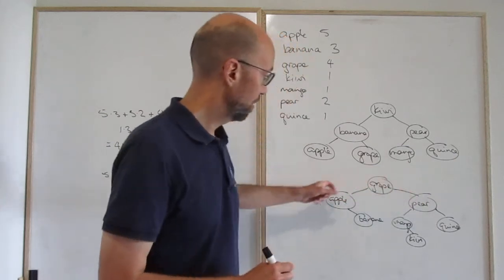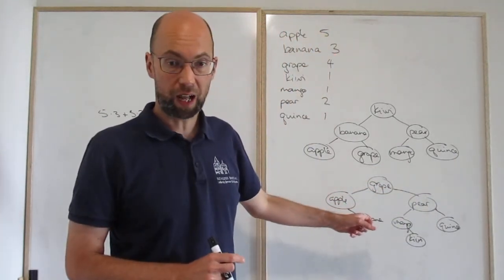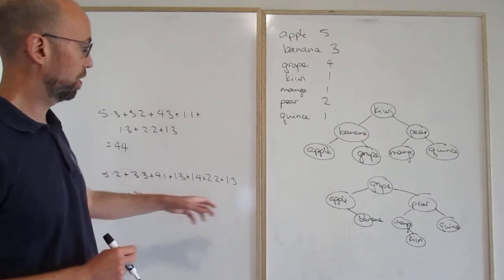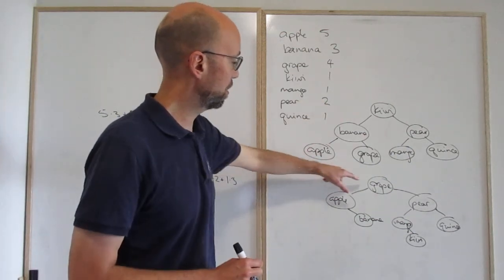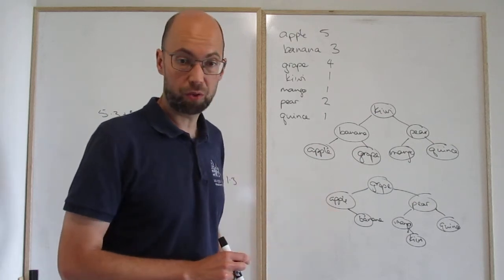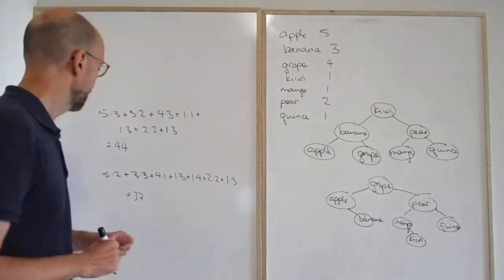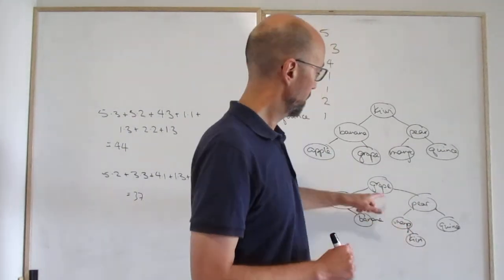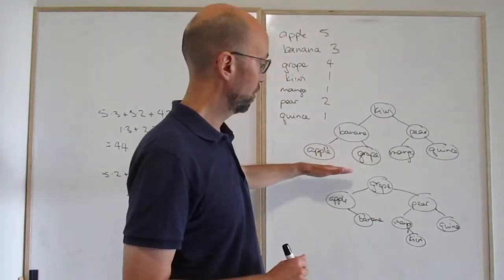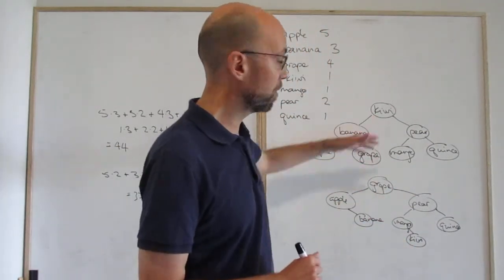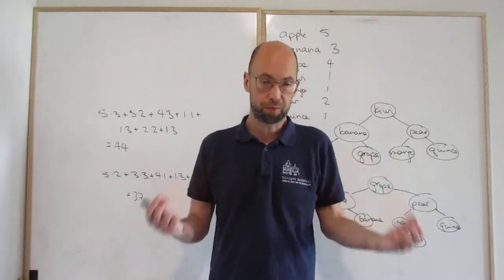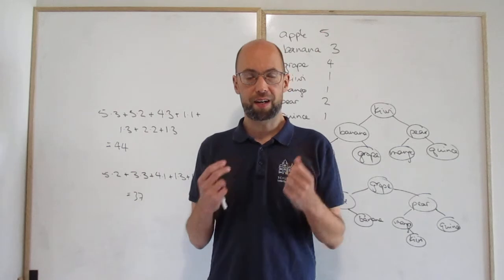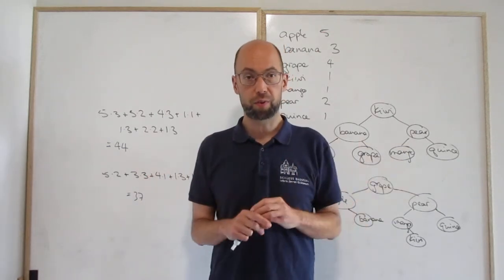So this is actually a better tree. Apple is at depth two here, so we spend time three. Here apple is at depth one, so we spend time two. This is actually a better tree. It's less balanced and the worst case is worse. Because here we have a node at depth three and here we don't. So the worst case here is worse, but if we know the probabilities with which we search for the keys, the frequencies, then we can actually build a tree that has better expected time, or better over a long series of queries. It's better.